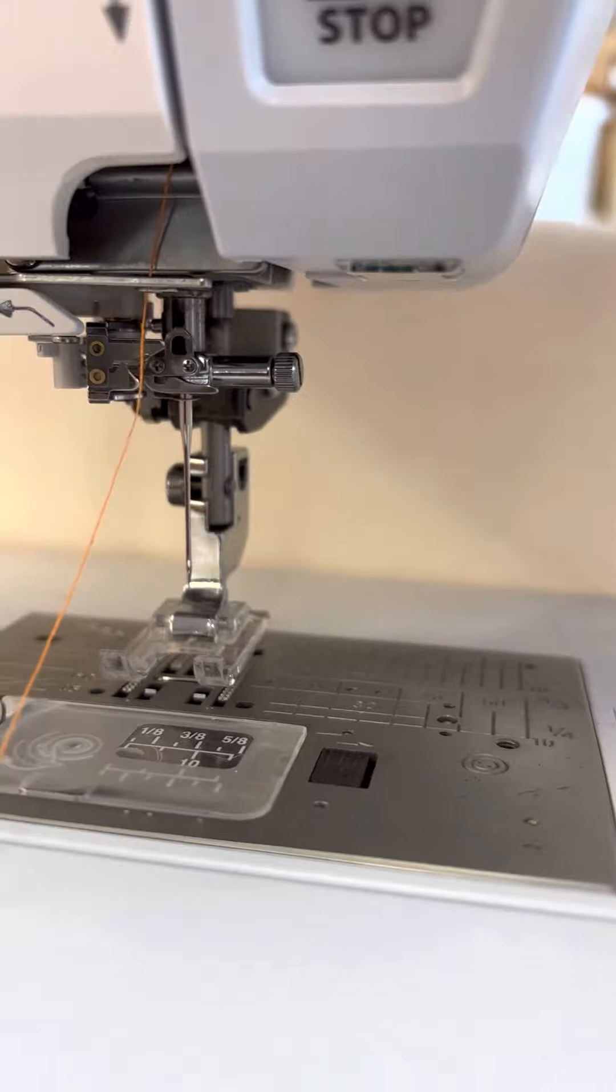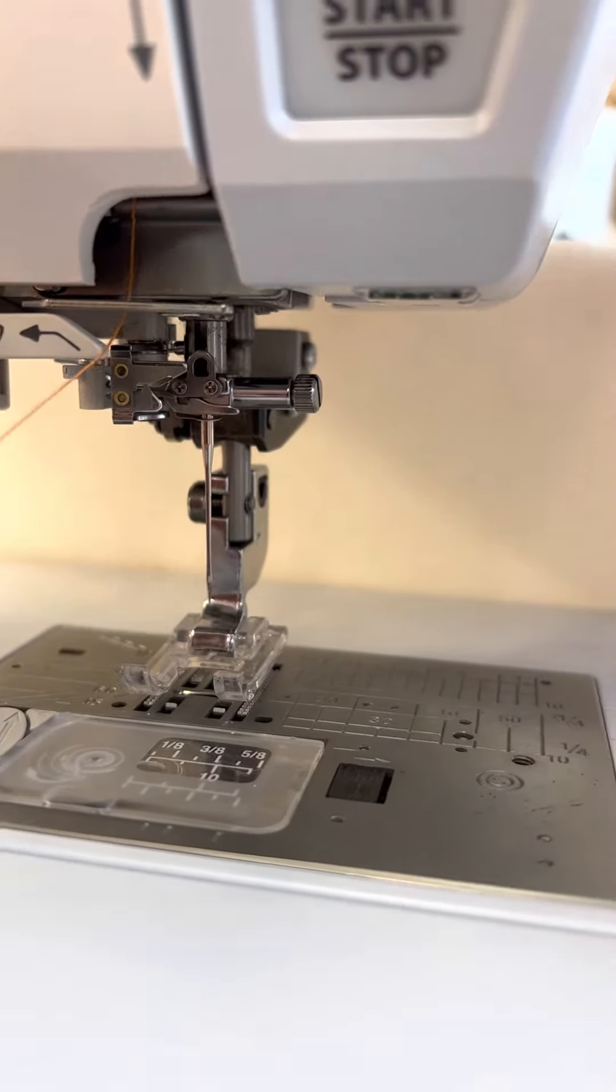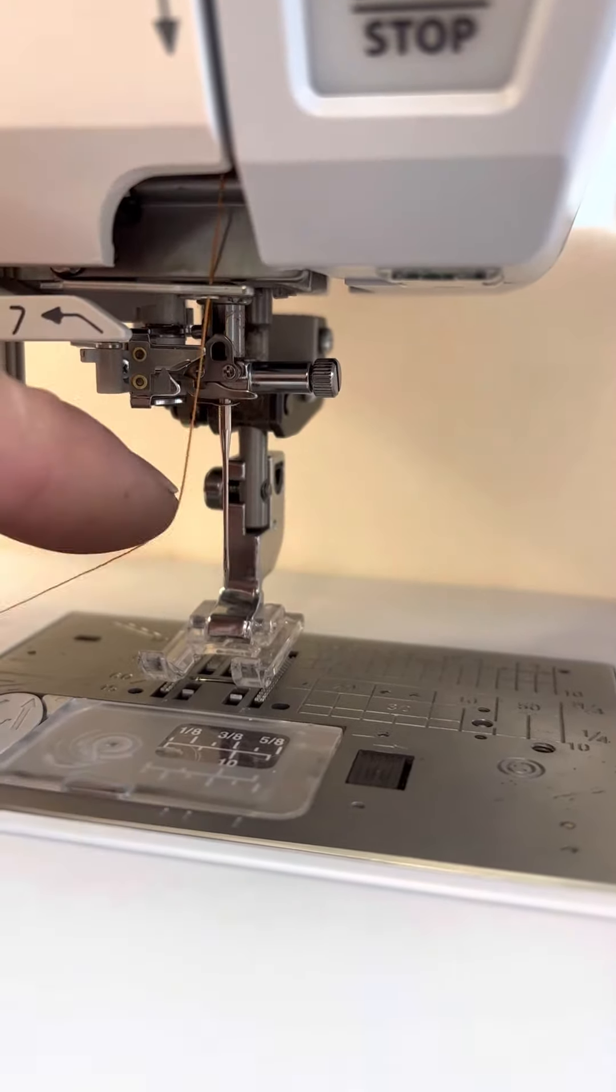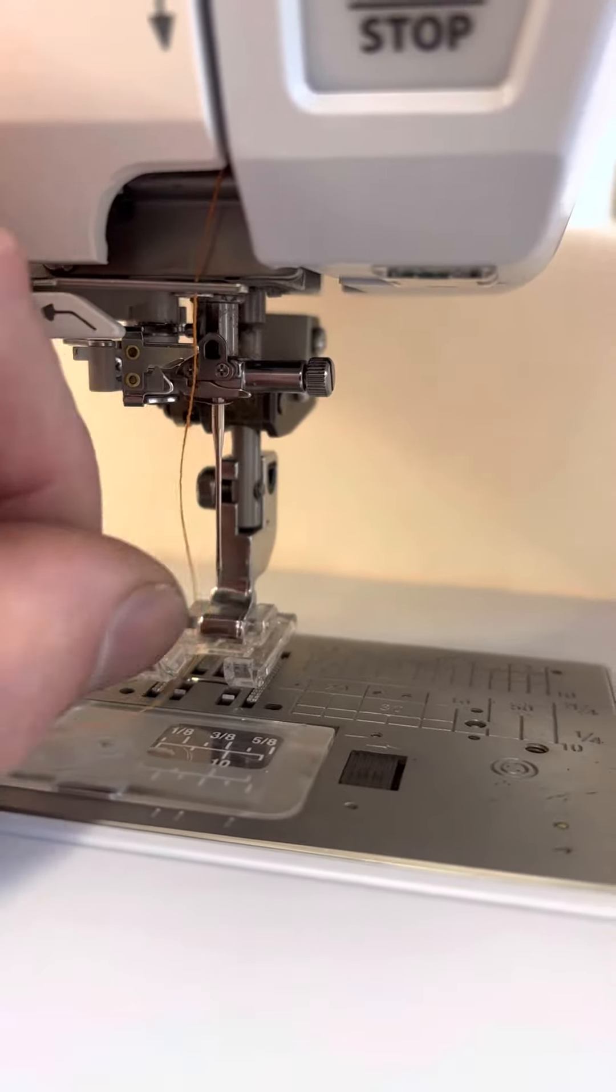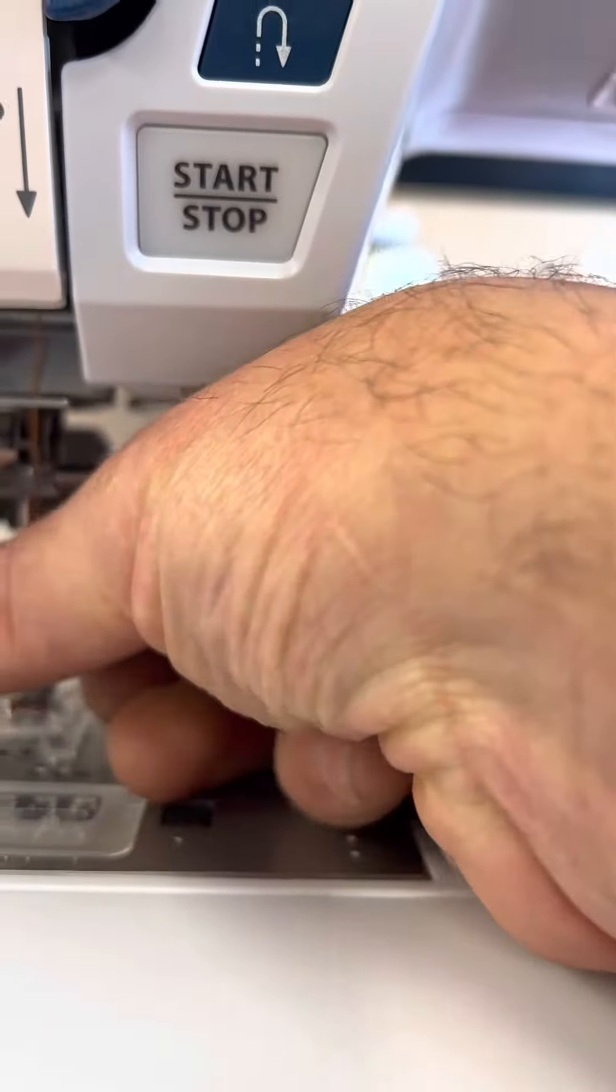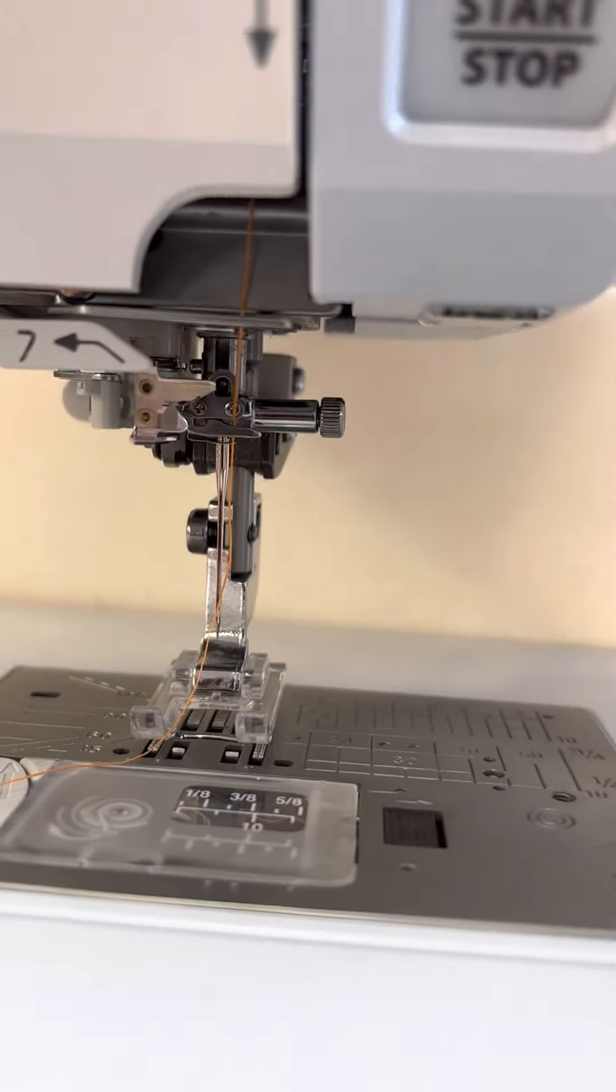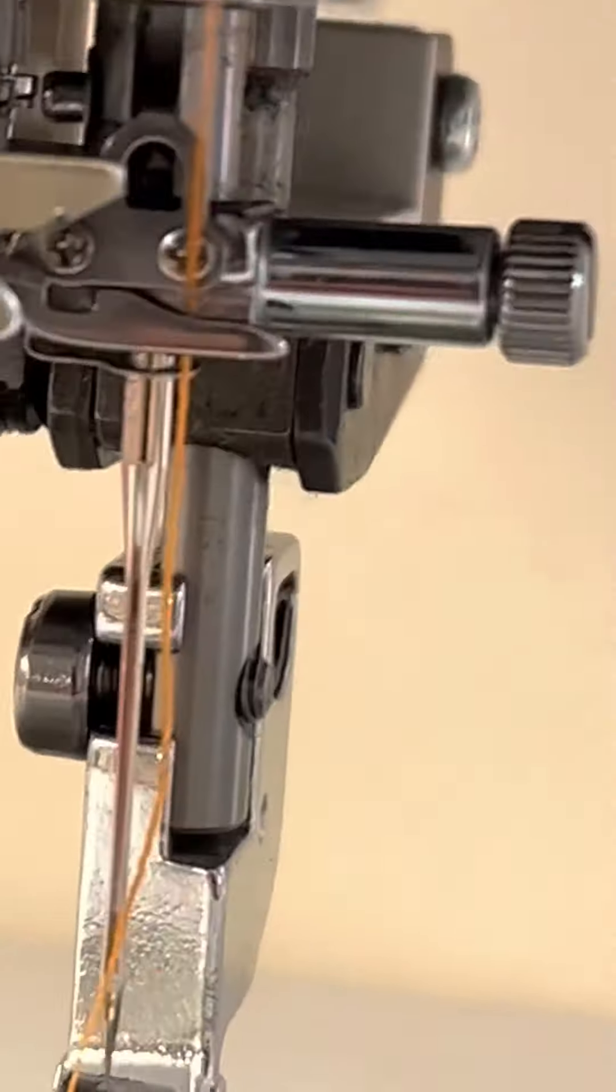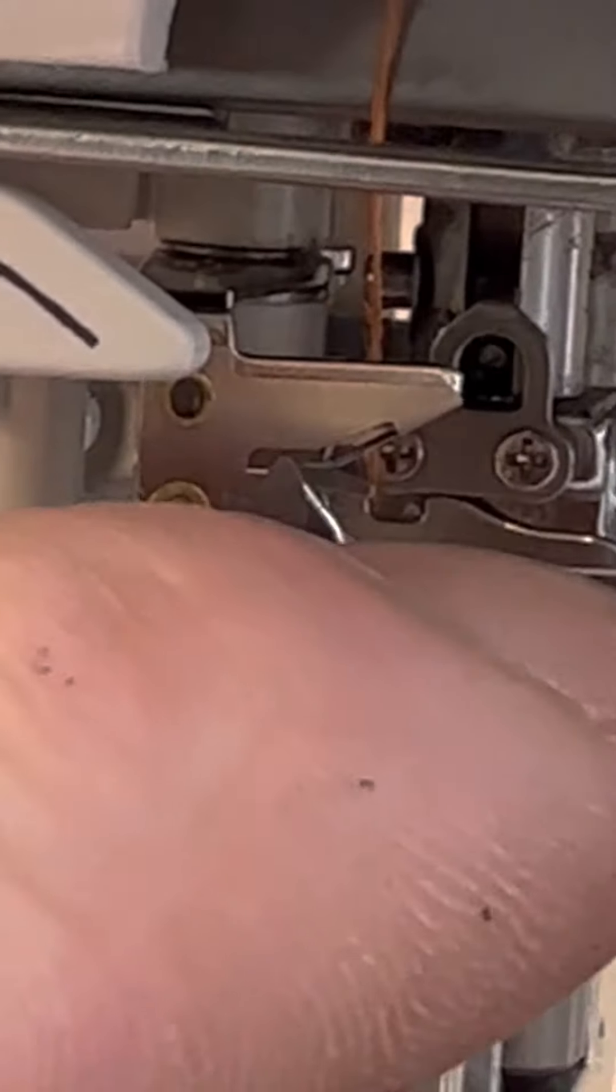On this particular Janome threader, a bit more automatic than some of the other more manual ones, needle or thread position is very important. We've got the thread there through to the guide on the needle clamp, and we must make sure that thread is all the way over to the left before we continue.